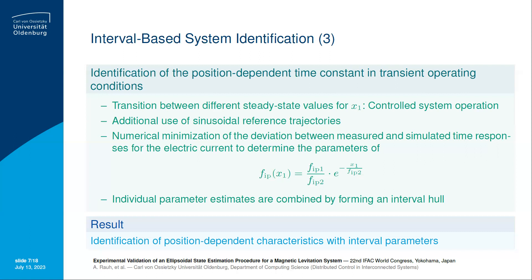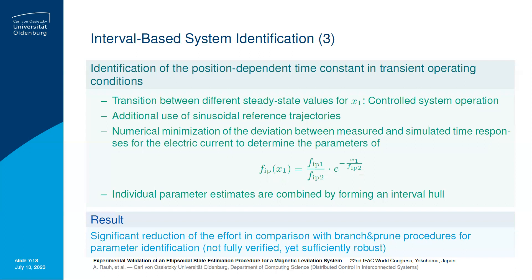The result of this identification procedure is therefore an identification of both position-dependent characteristics for the magnetic actuator as well as for the time constant of the underlying current control. Moreover, it should be pointed out that this approach leads to a significant reduction of the computational effort in comparison with classical branch-and-prune procedures that are well known from the field of global optimization, which could be used as an alternative for the parameter identification scheme. However, our procedure is not fully verified — that means there may exist some observed state trajectories that are not embedded fully within the characteristics we have identified — but as we can show by the following examples, the corresponding model is yet sufficiently robust.